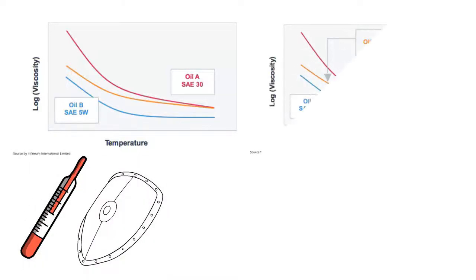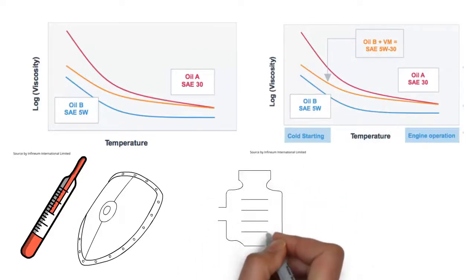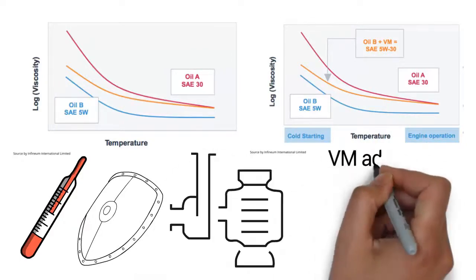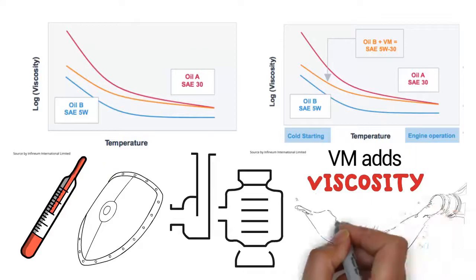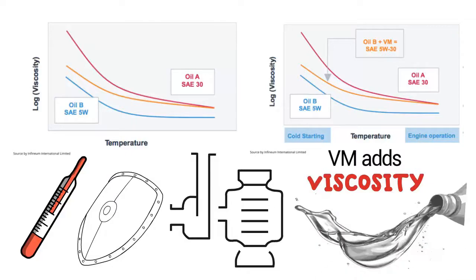Oil A, the thicker base oils, provide protection at high temperatures but have insufficient pumpability at low temperatures. VM adds viscosity to thinner oil at both high and low temperatures, proportionally to base oil viscosity at the particular temperature.